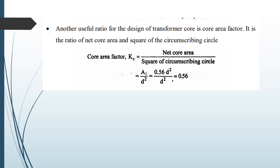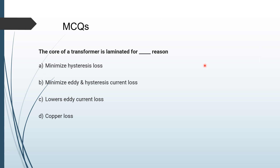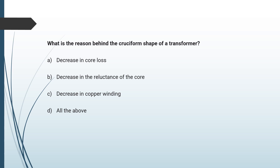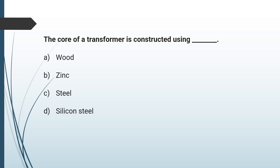For MCQ practice: the core of a transformer is laminated to lower the eddy current losses. The reason for the cruciform shape of a transformer core is that it decreases core loss, reduces copper winding length, and decreases the reluctance of the core — so the answer is all of the above. The core of a transformer is constructed using silicon steel.